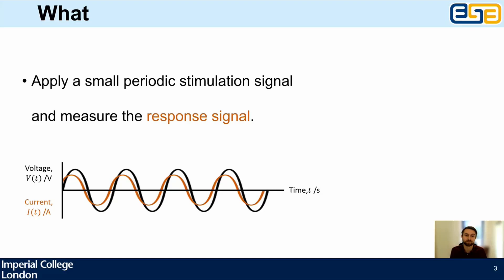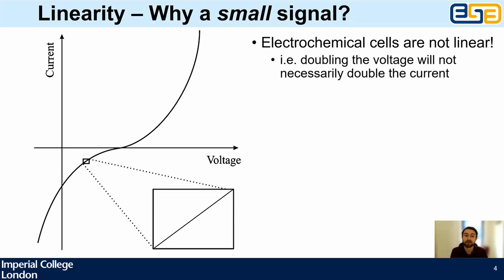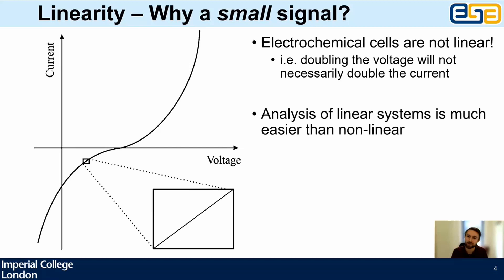A few questions before we look into the analysis. Many of you have either done impedance or seen Nyquist plots. I'm keen to start from the very beginning. First question from the perspective of linearity: why do we use a small signal? The answer is because electrochemical systems aren't linear — if you double the voltage you wouldn't usually expect to get double the current. They are often very non-linear.